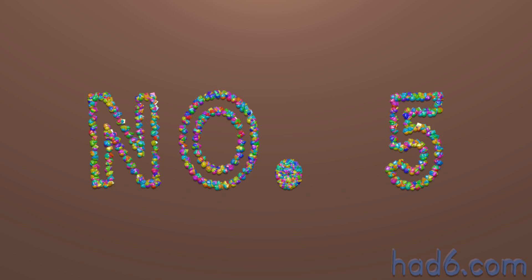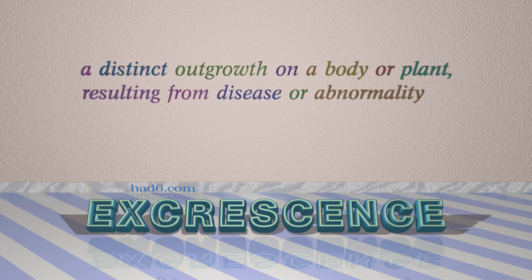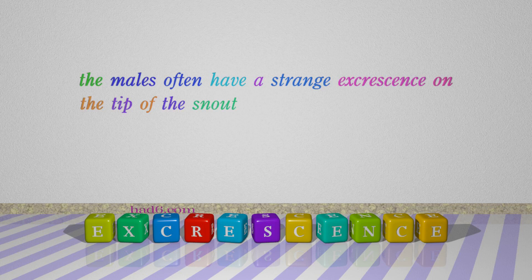Number 5: Excrescence — which means a distinct outgrowth on a body or plant, resulting from disease or abnormality. For example: The males often have a strange excrescence on the tip of the snout.